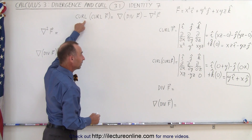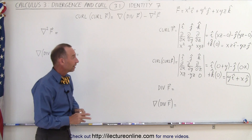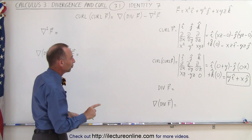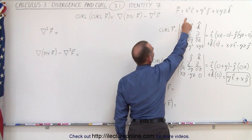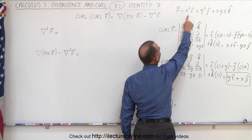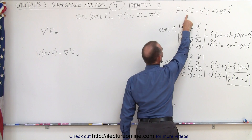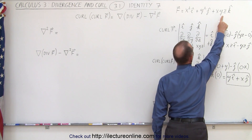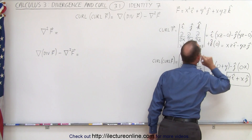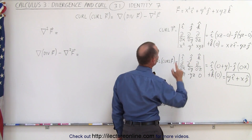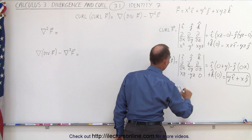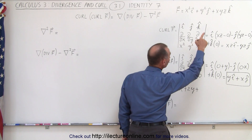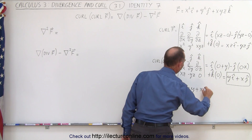First we need to find the divergence of our vector field, which is the partial derivative with respect to X of the X component, plus the partial derivative with respect to Y of the Y component, plus the partial derivative with respect to Z of the Z component. This becomes 2X plus 2Y plus the derivative with respect to Z, which gives X times Y.